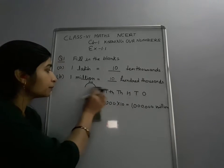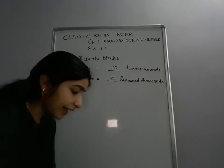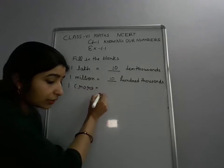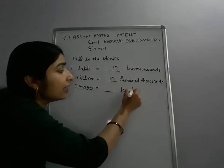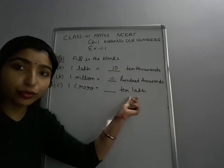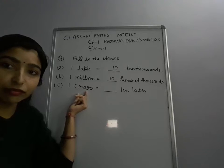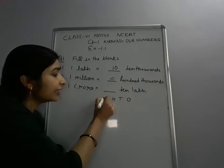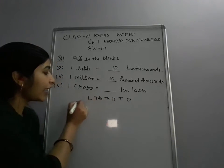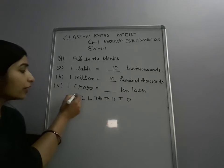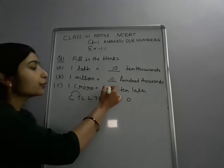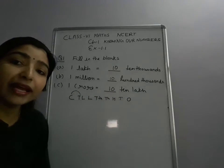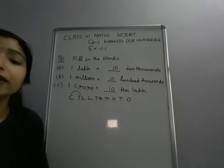Now the next part — C part: 1 crore is equal to dash 10,000,000. Lakh is also Indian system and crore is also Indian place value system. So you just draw the Indian place value system: 1, tens, 100, 1000, 10,000, lakh, 10 lakh, and crore. So here is also one jump. So you can say 1 crore is equal to 10 × 10 lakhs. When you multiply 10 lakhs by 10, you will get 1 crore.